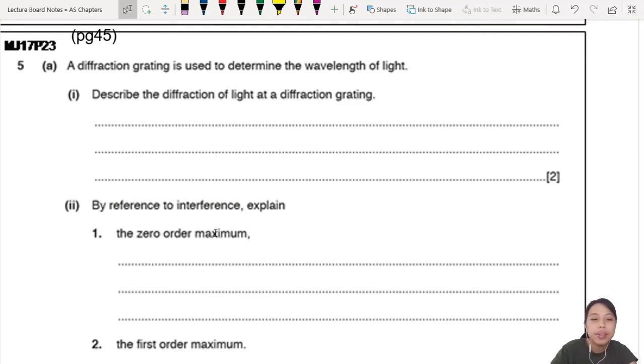First one, describe the diffraction of light at the grating. Same thing - you describe waves go here, spread out into geometric shadow. Just go back to the old one and check it out.